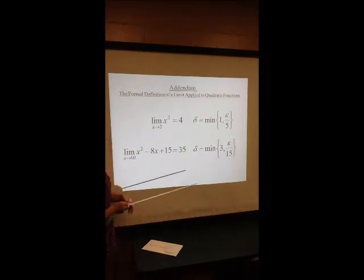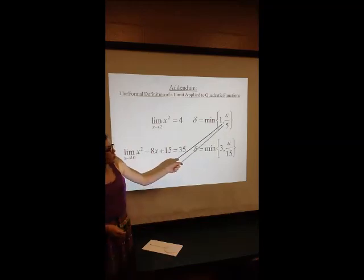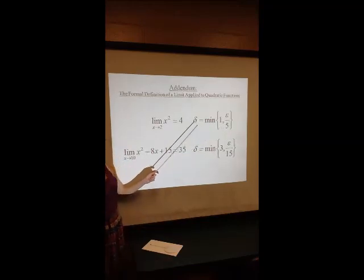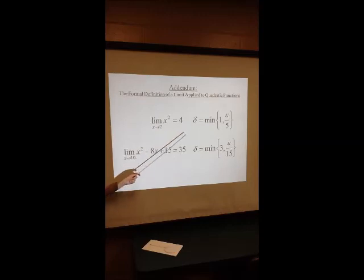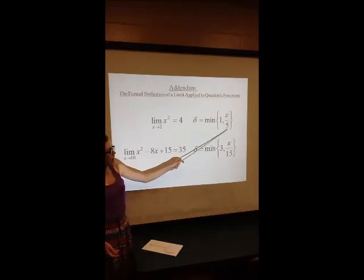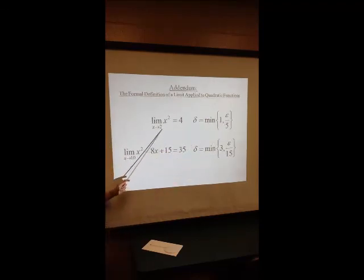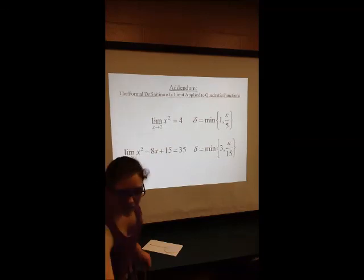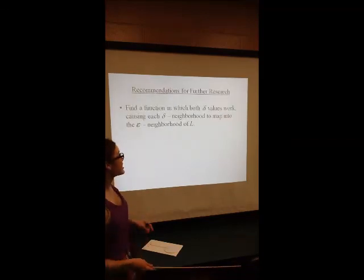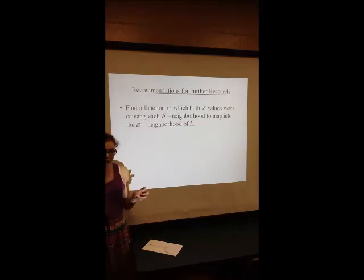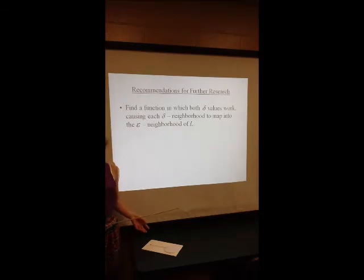So what this means is that if epsilon equals 6, in this case 1 is the minimum, so a 1-neighborhood of 2 would map perfectly into an epsilon-neighborhood of 4. If epsilon equals 4, then epsilon over 5 would be the minimum, so a 4 over 5 neighborhood of 2 would map perfectly into an epsilon-neighborhood of 4. A recommendation for further research would be to find a function in which both of the minimum delta values work, causing each delta-neighborhood to map into the epsilon-neighborhood of L.